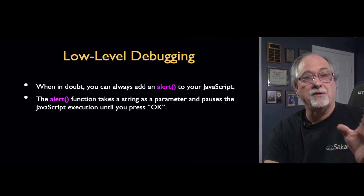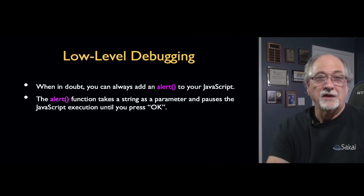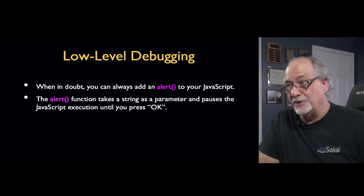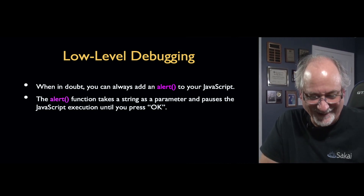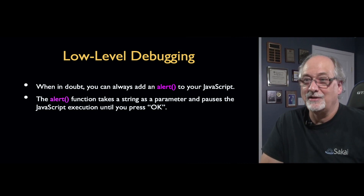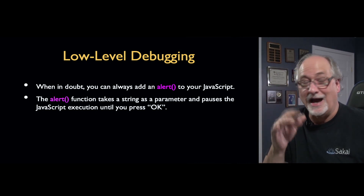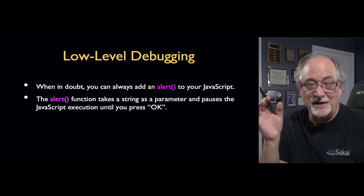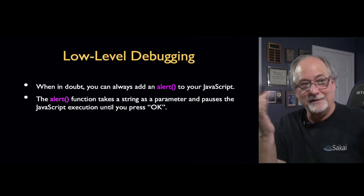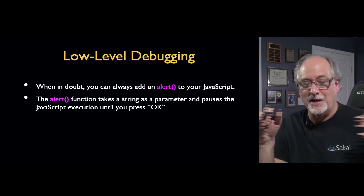JavaScript has access to the screen when it's running inside a web page — that's powerful, and we're going to drive a truck through all that. Whenever I learn a new programming language, the first thing I do is print a debug statement. The debug statement is called alert — you say alert, put a string in it, and it stops the program. You have to press OK and then it continues on.